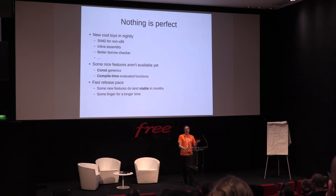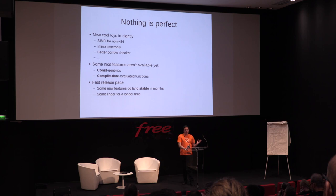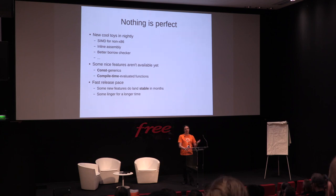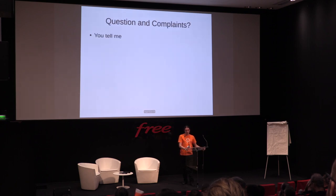Rust has the ability to compile and run a restricted set of the language as a constant function, which is a cool feature everyone would like to have. The development of the language is very fast — every few months you get a new stable version, usually compatible with the previous one. If you have something you want to get into production, it's better to keep using stable and wait six months before deploying new features. And that's it — if you have questions, I'm here.